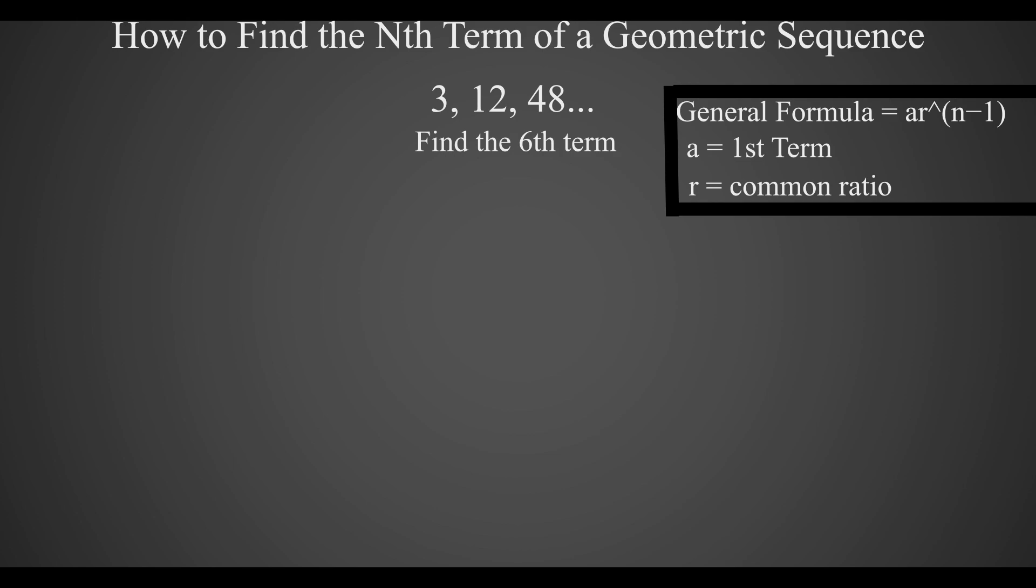We have to use our general formula where a is equal to the first term and r is the common ratio. Since 3 is the first term, a will be equal to 3, and since the numbers are being multiplied by 4 in this sequence, r will be equal to 4.